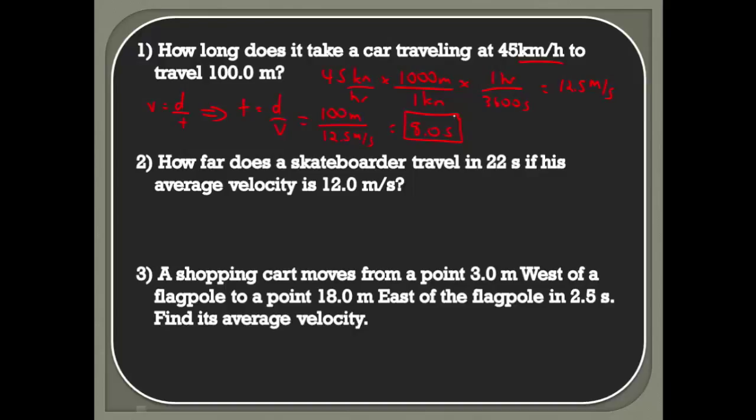For number two, how far does a skateboarder travel in 22 seconds if his average velocity is 12 meters per second? We can use these equations interchangeably. We're looking for d, so d equals speed times time, or velocity times time. Plug in the values: 12 meters per second times 22 seconds gives you 264 meters. If you're a stickler about sig figs, this should really be 260 meters.